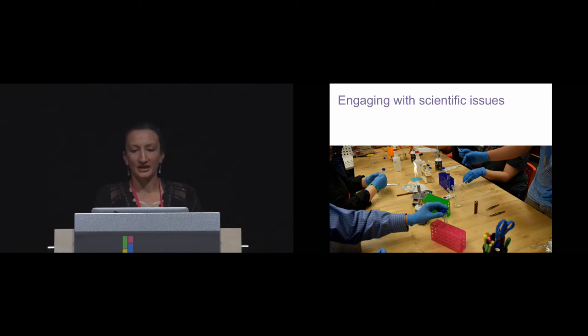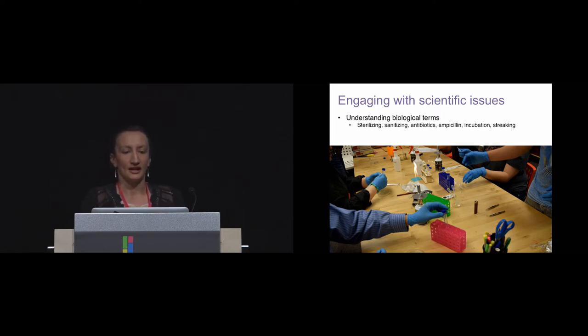And then during our auto-ethnographic reflection, we saw biosensing as a way of engaging with broader scientific issues. So on a practical level, the hands-on work led us to discuss different scientific terms, and it led students to have further understanding of words such as sterilizing, antibiotics, ampicillin, incubation, streaking. And more broadly, we had many conversations about other scientific concepts that were related to this. So we talked about probiotics, the way antibiotic resistance is developed, the scientific methods, and how vaccines are developed.